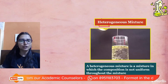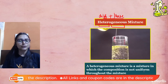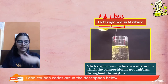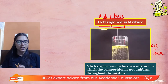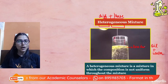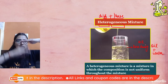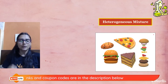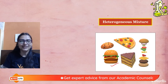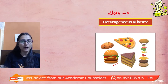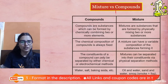Heterogeneous mixtures — 'hetero' means different phase — have a non-uniform composition throughout with visibly different phases. For example, oil in water: oil has less density so it forms a separate layer on top, while water stays at the bottom. Other examples include chalk powder in water, mud in water, burgers, and pizza — you can see the separate components clearly.